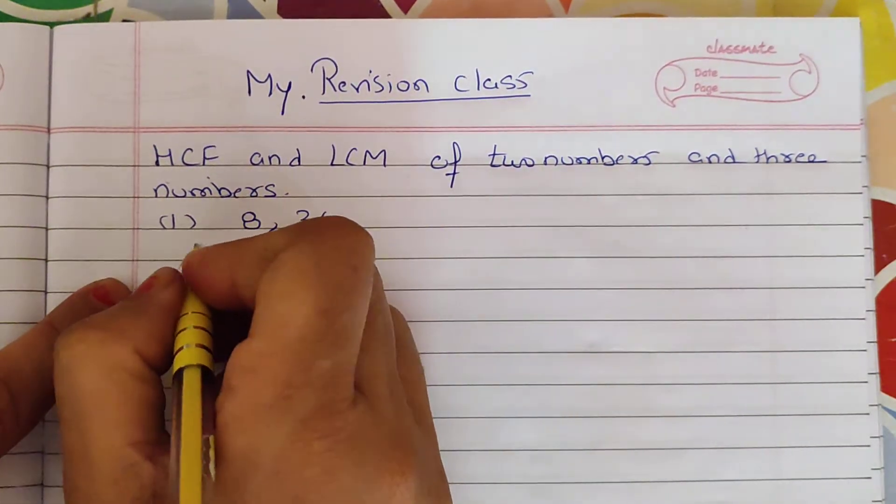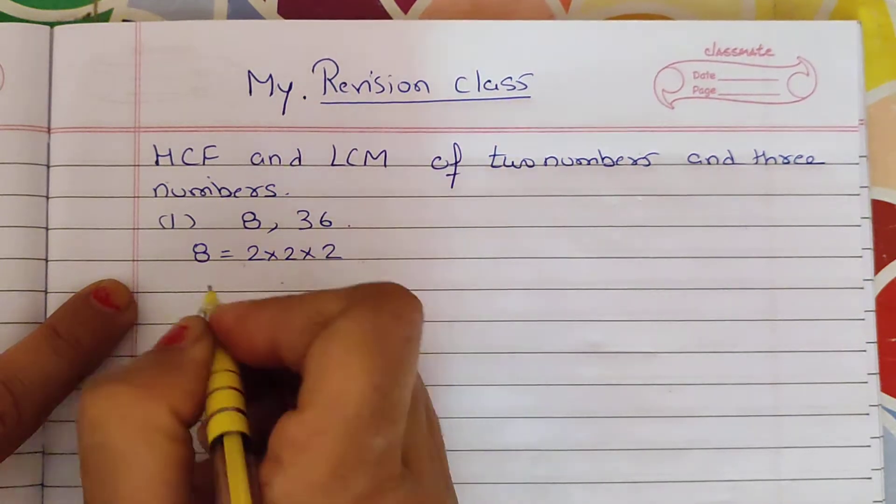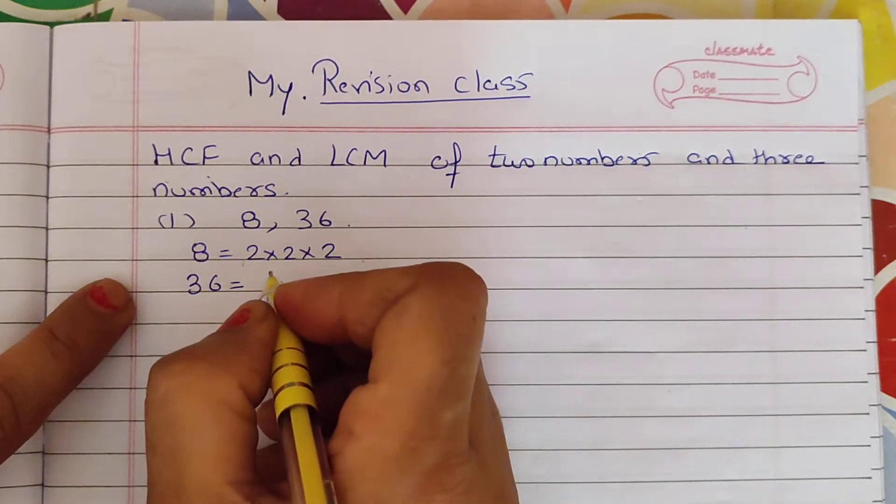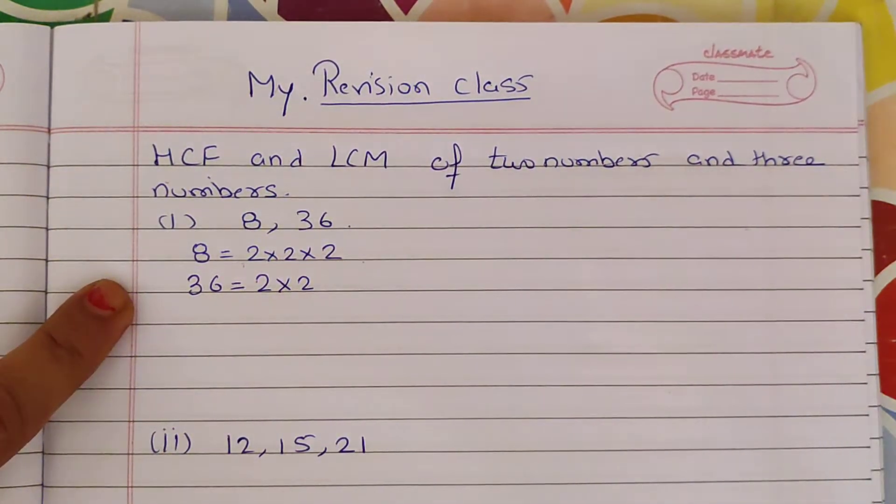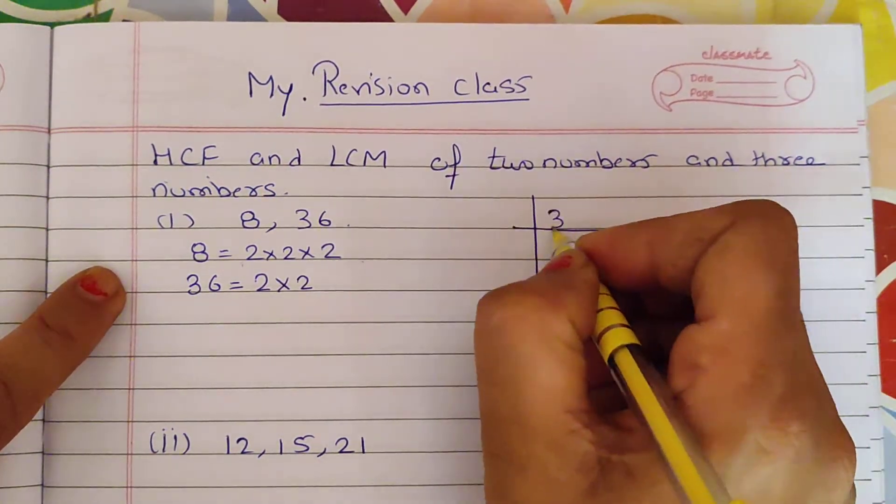First of all, we make factors. We factorize 8, so 2 into 2 into 2. In this way, we can factorize 36. How do we factorize? 2 into 2, 2 into 4. If you have a problem with factors, then students take LCM and make factors.